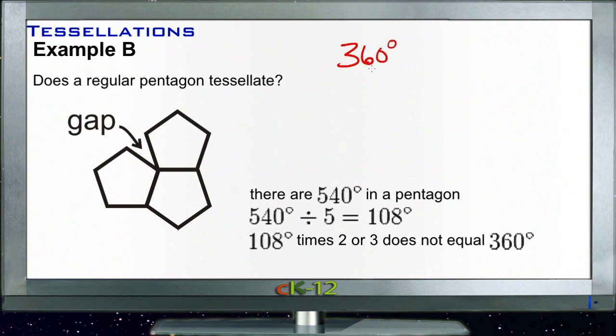We're going to do it with a pentagon. A pentagon is 108 degrees on each angle. So 360 degrees divided by 108 degrees—if we actually do that math...